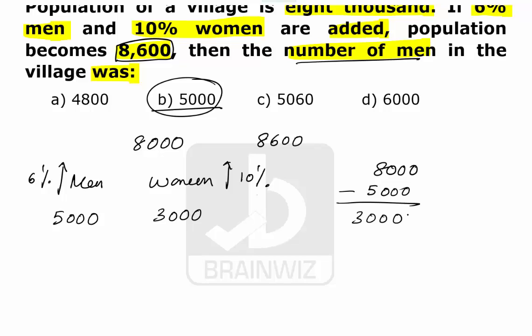So now he said 6% of the men were increased. So we all know that in 5000, 1% will be 50. So 6% will be 300. Same fashion here, 10% of the women were increased. So in 3000 we all have a basic knowledge that 10% will be 300.